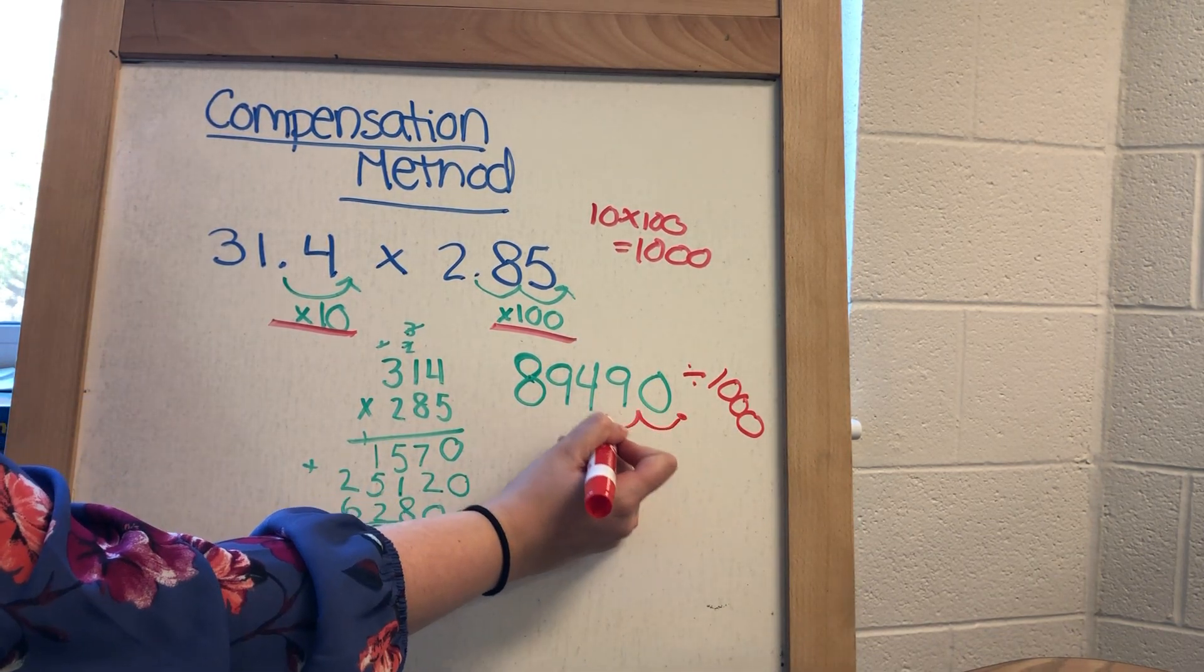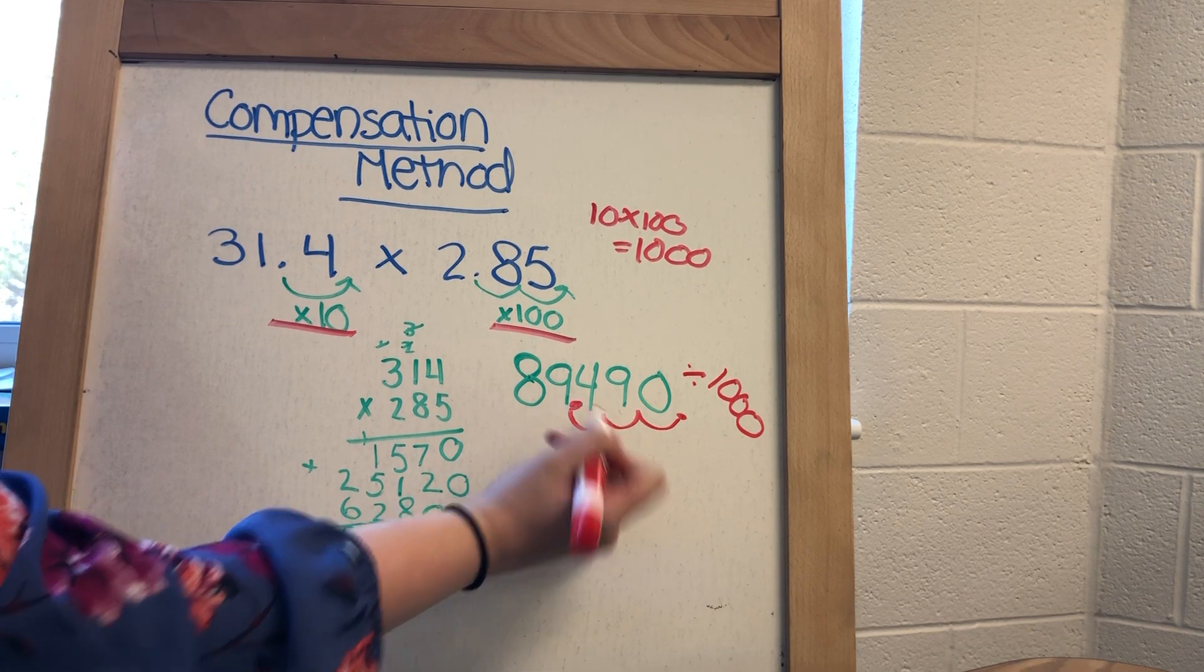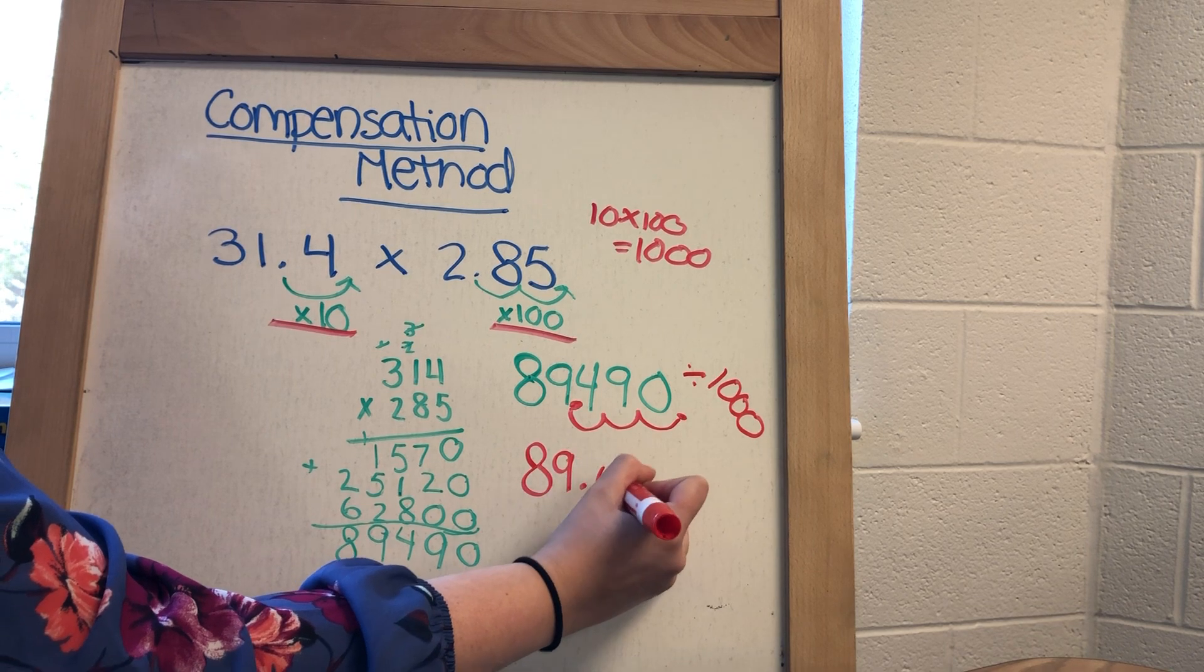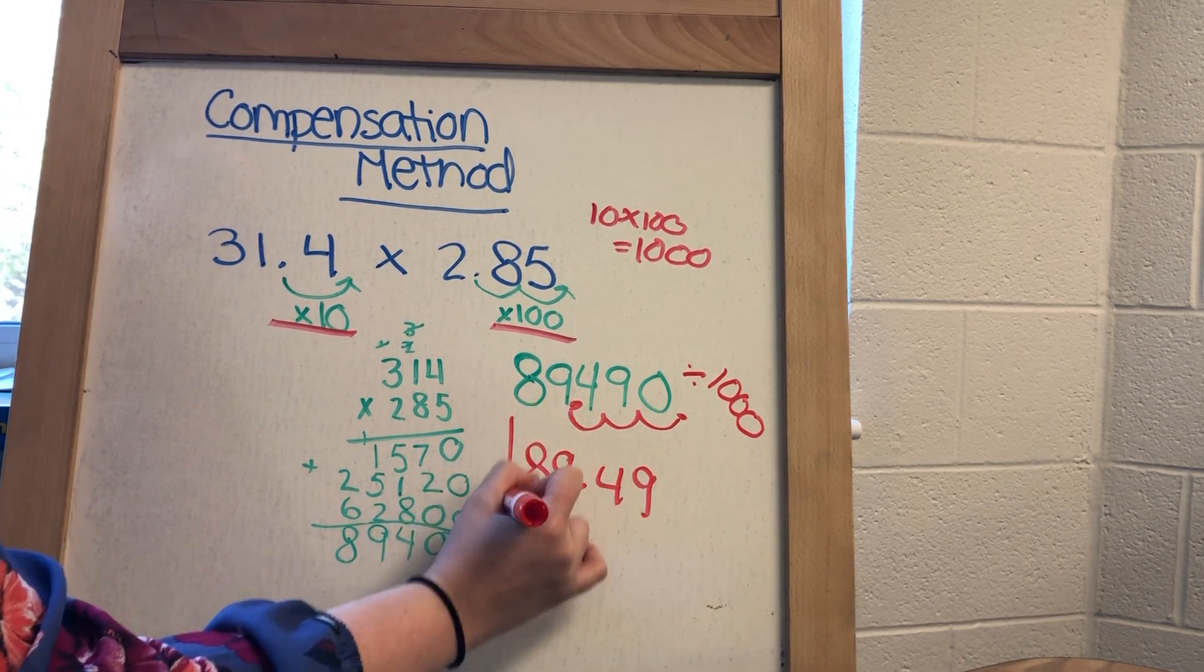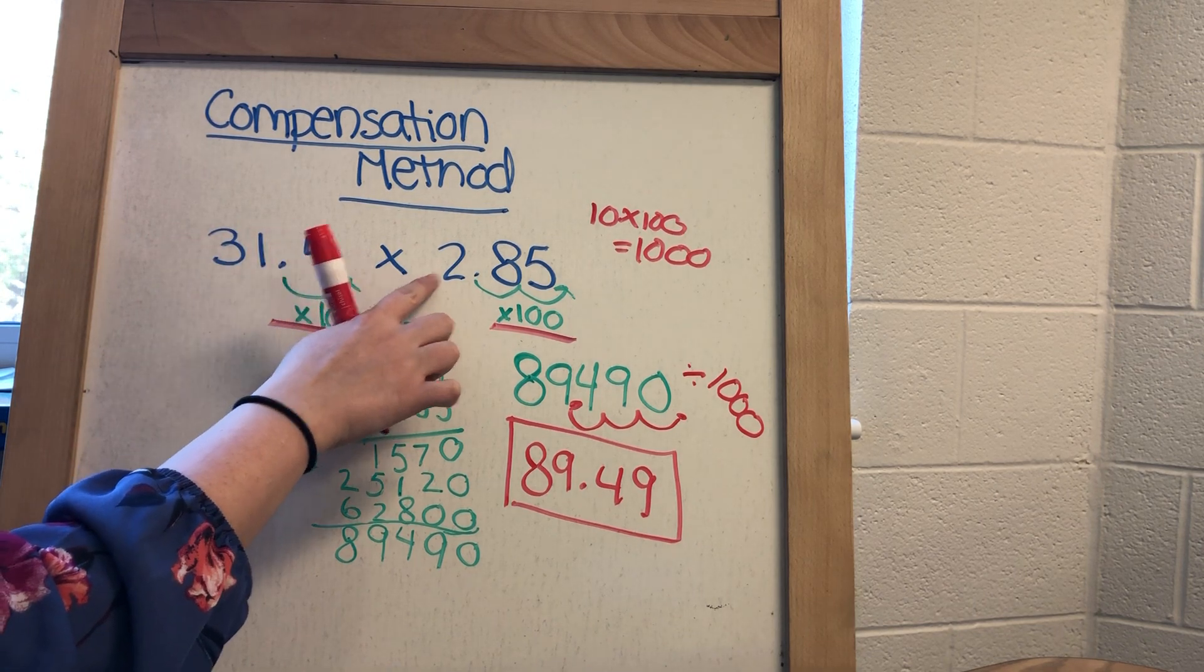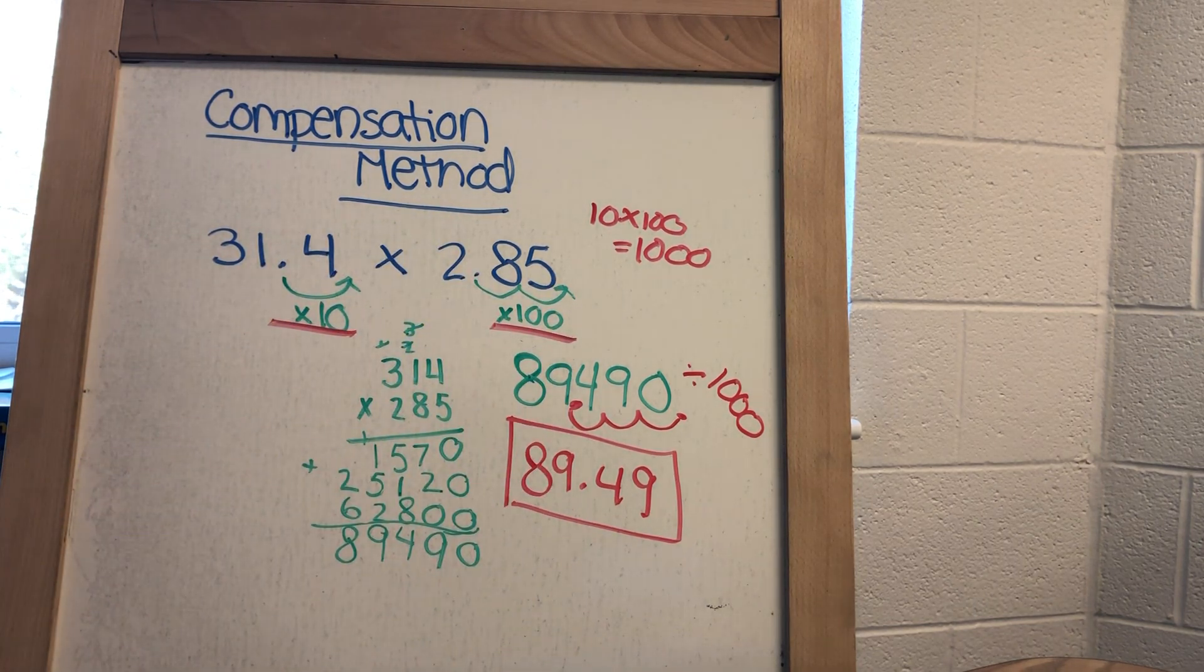So 1, 2, 3. So my decimal is going to end up in there. My final answer is going to be 89.49. So 31.4 times 2.85 is 89.49.